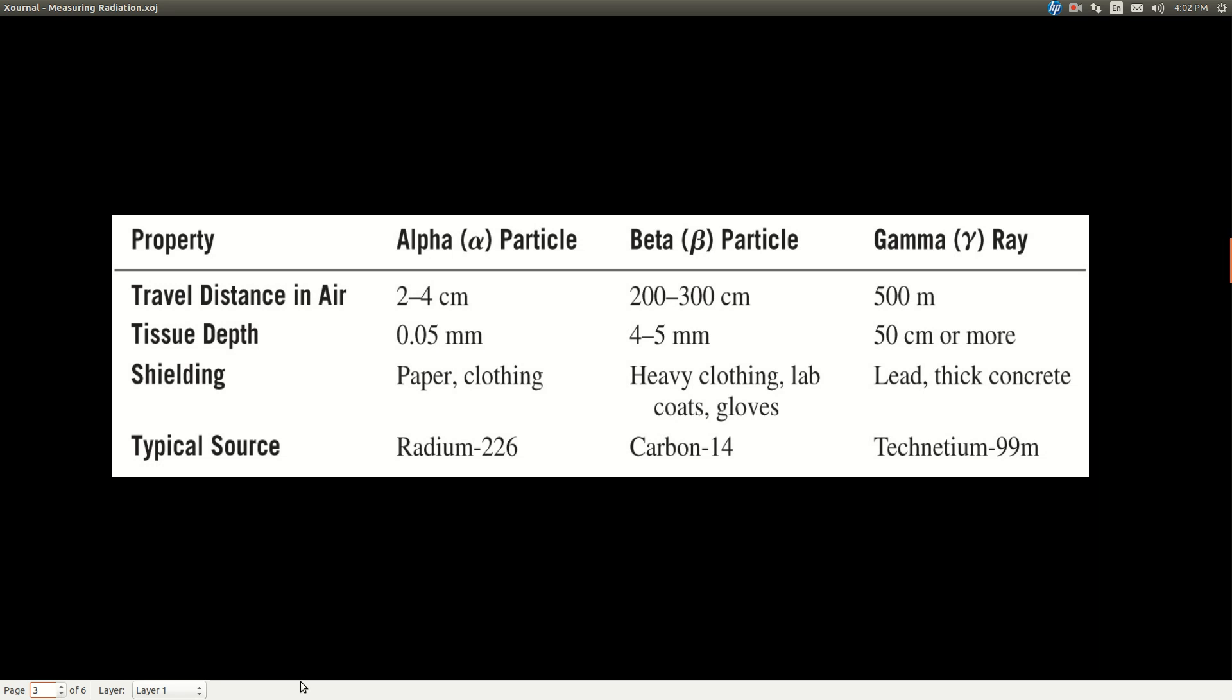Now, the different types of radiation that we've seen, basically the alpha particles, beta particles, and the gamma rays, what this table does is it shows you about how far they can travel through the air. An alpha particle not very far, two to four centimeters.